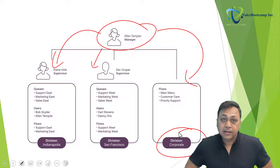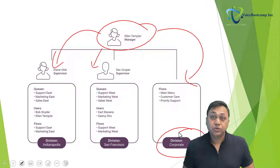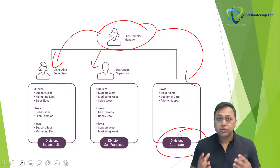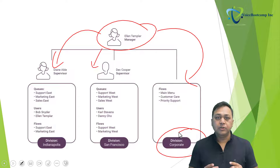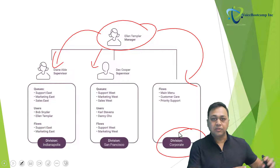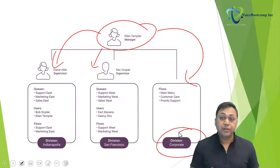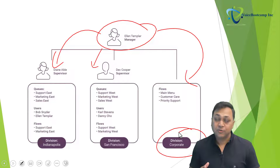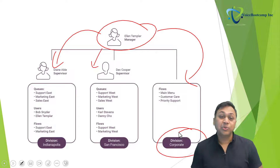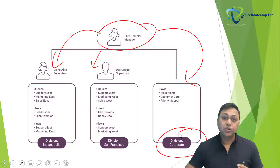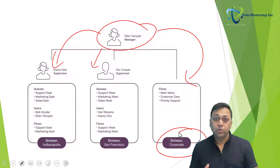In this example, Ellen has access to queues, users, and flows in all divisions, whereas Diane only has access to the east coast and Dex only has access to the west coast. This gives you control so that users responsible for one area cannot access data from another. From Diane's view, she will only see metrics and conversation data associated with the Indianapolis division — she will not be able to see anything from San Francisco.